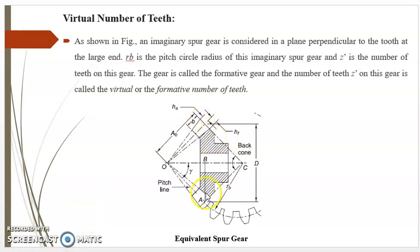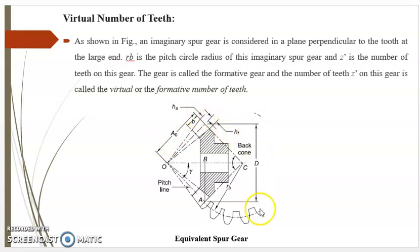Therefore, this is the bevel gear; the spur gear is considered in the plane perpendicular to the bevel gear tooth. On the back side, gamma is the pitch angle, B is the face width, A0 is the cone distance. Ha is the addendum, Hf is the dedendum, and capital D is the pitch circle diameter of the bevel gear. This is known as the back cone and this is known as the pitch cone.